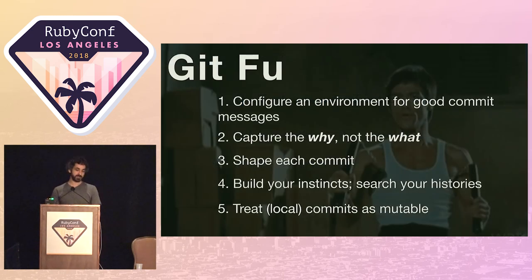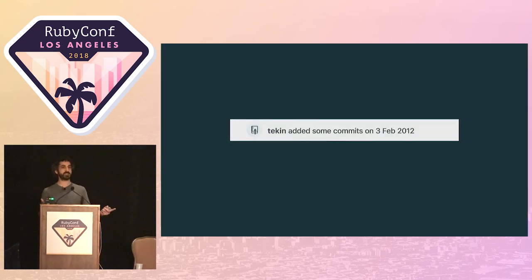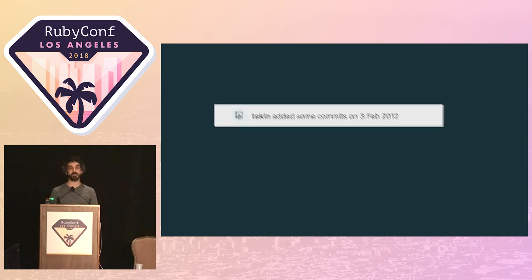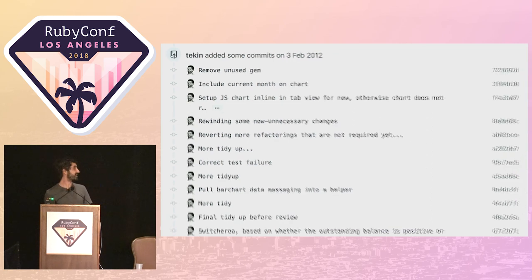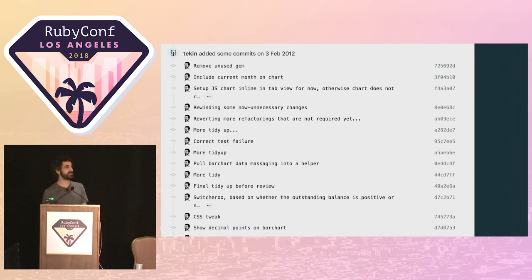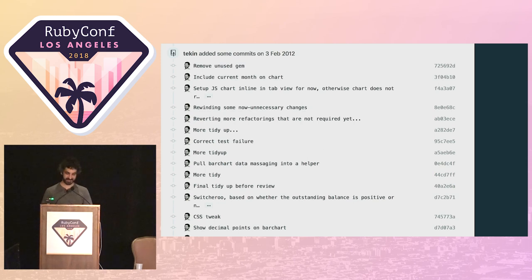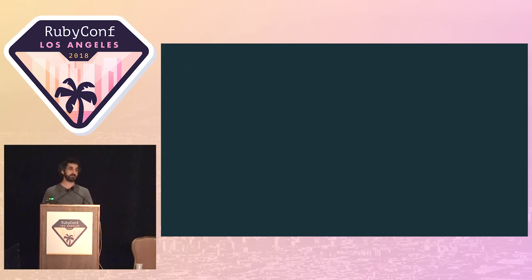Unfortunately there aren't really any silver bullets, but hopefully those tips will help on the journey to getting better at constructing revision histories. Everyone in this room will exist somewhere on a spectrum of Git fluency, but we all start in the same place. A history put together back in 2012 isn't going to be much help to somebody trying to understand the nature of the work being done at the time. Since then, working with some fantastic developers has helped understand the benefits of putting together good revision histories and also learn the skills to do so in the first place.